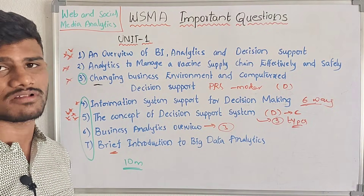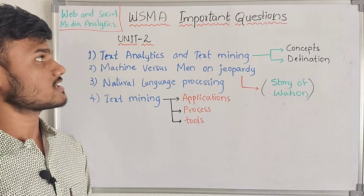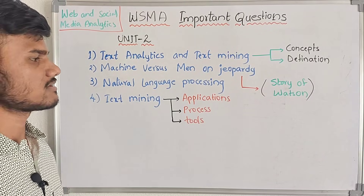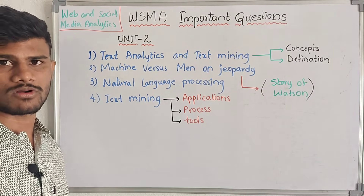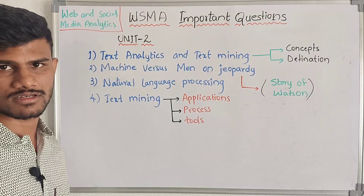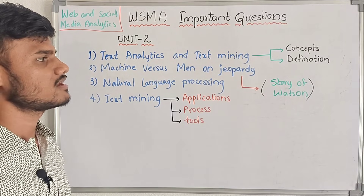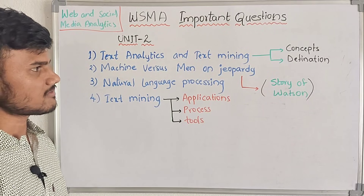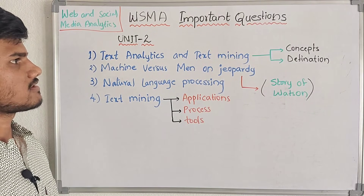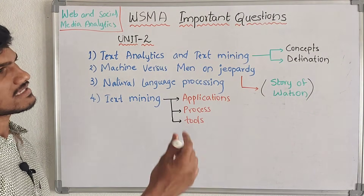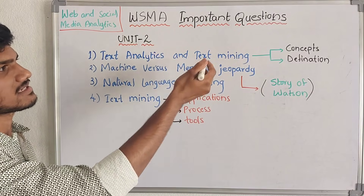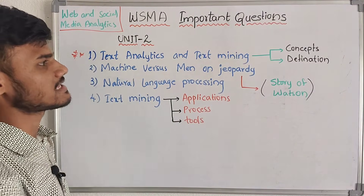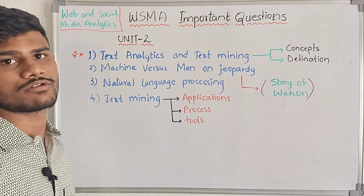This is completely the first unit. Coming to our second unit. In this second unit, we have text analytics and text mining. The first concept has 4 questions. If you have a choice to get 3 perfect answers, you can easily get 10 marks. The first question is the basics of text analytics — concepts and definitions of text analytics and text mining. Both are individual questions.